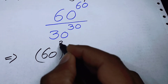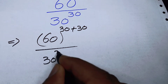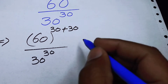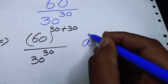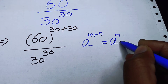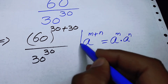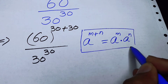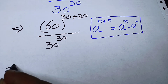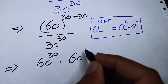First, we can write the exponent of 60 as 30 plus 30, giving us 60 to the power of (30 plus 30) over 30 to the power of 30. Now we apply the exponent law: a to the power of (m plus n) equals a to the power of m times a to the power of n.